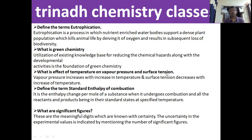We also need to learn what is Gibbs free energy. Gibbs free energy is the combined form of enthalpy and entropy, defined as G = H − TS. Next: what are significant figures? These are the meaningful digits which are known with certainty. The uncertainty in experimental values is indicated by mentioning the number of significant figures. These are some of the important questions we need to learn to get 60 out of 60.